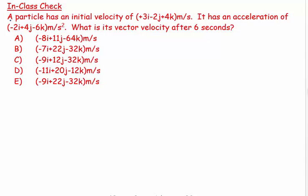A particle has an initial velocity of 3i minus 2j plus 4k. I'm not even going to try and draw that out realistically. I'm just going to represent it by Vi and I'm going to write along the side Vi equals 3i minus 2j plus 4k, that's going to be meters per second.